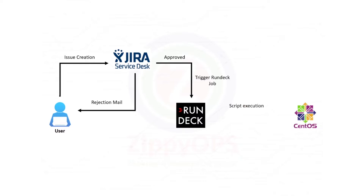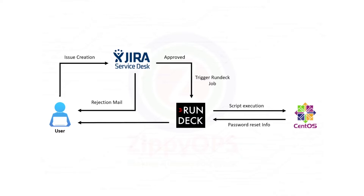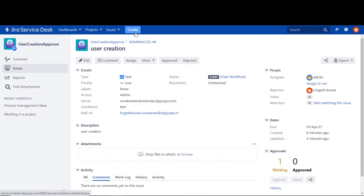In the next stage, the Rundeck job will execute a script that has the instructions to reset the user's password on the Linux machine, based on the details entered in the issue. Once the Rundeck job completes, an email is triggered. Finally, an email for the completion of the user password reset on the Linux machine is sent to the user.